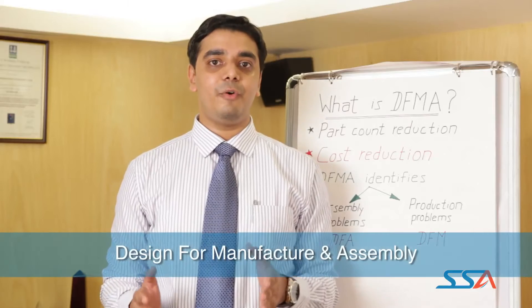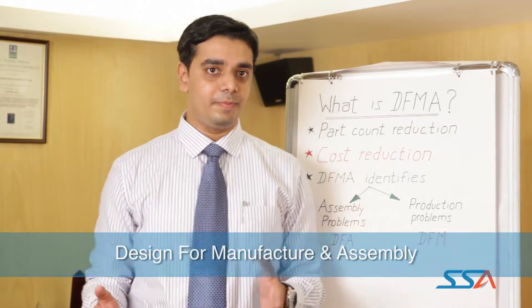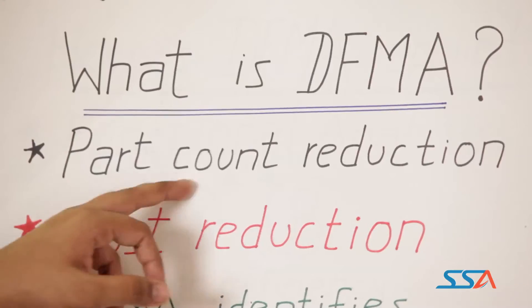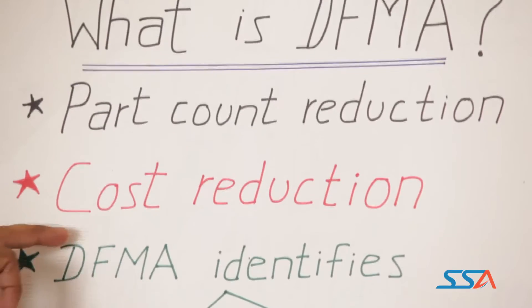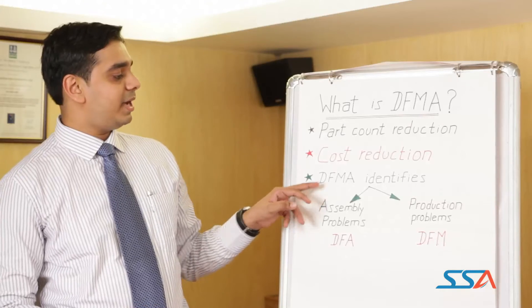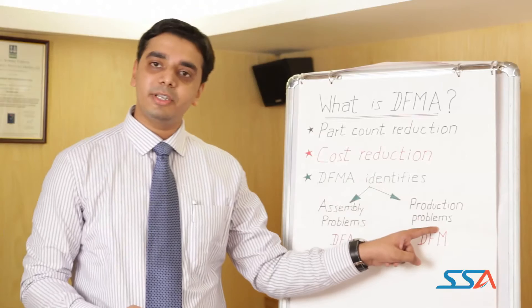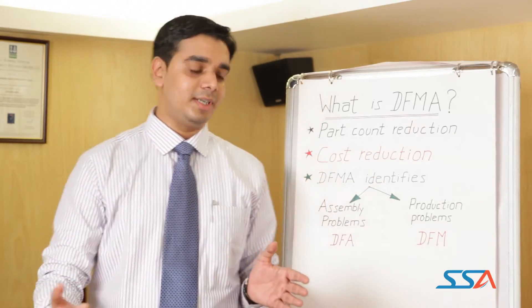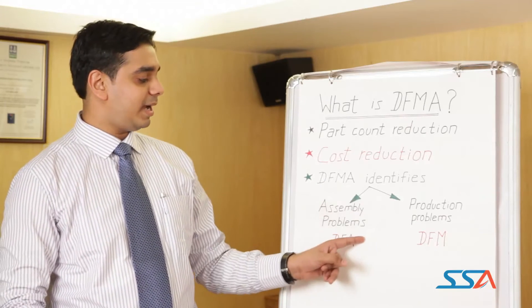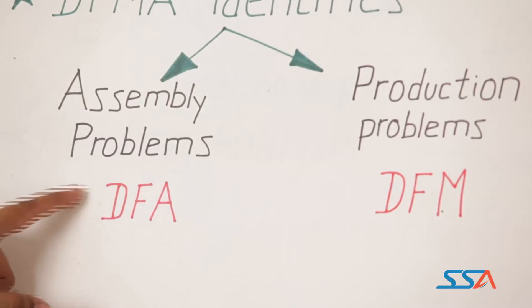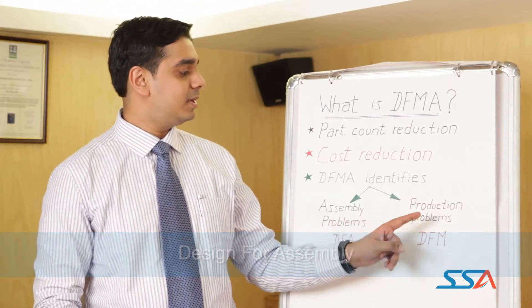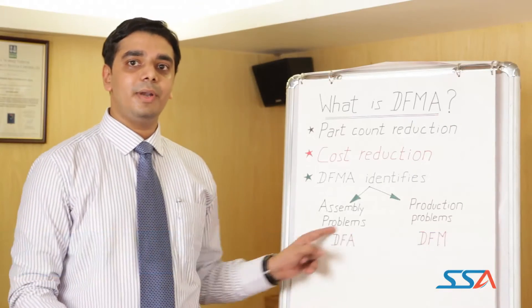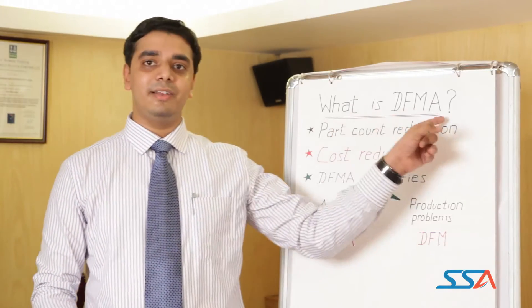DFMA stands for Design for Manufacture and Assembly. The main purpose of DFMA is to reduce the number of parts in a product assembly, thereby reducing the cost of the product and assembly. DFMA identifies assembly problems and production problems occurring in the product design and throughout the development process. Problems addressed by assembly are termed DFA, and together they are clubbed as DFMA — Design for Manufacturing and Assembly.